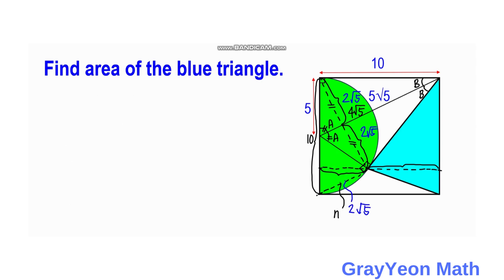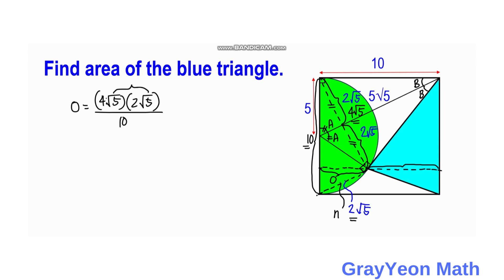Next, we apply the altitude-on-hypotenuse theorem again to find the length o. The legs are 4 square root of 5 and 2 square root of 5, and the hypotenuse is 10. So o equals (4 square root of 5 times 2 square root of 5) divided by 10, which simplifies to 40 divided by 10, so o equals 4.